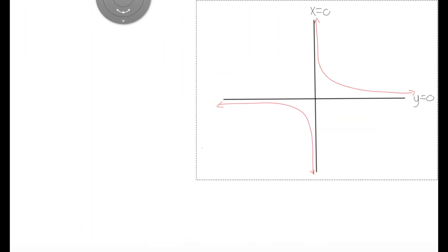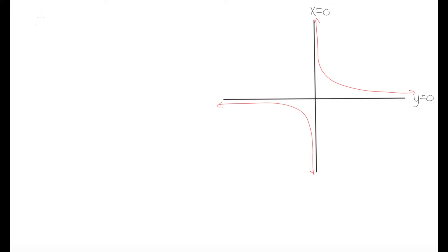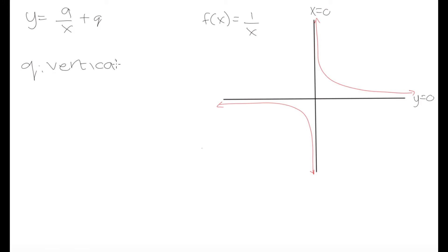Now let's look at the effect of q. q represents the vertical shift. Depending on our value of q, our two curves are going to be shifted either upwards or downwards. If q is greater than zero, we're going to see an upward shift of the graph. If q is negative, we're going to see a downward shift. So q represents our vertical shift.